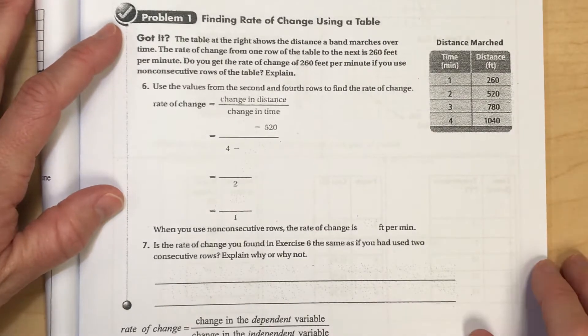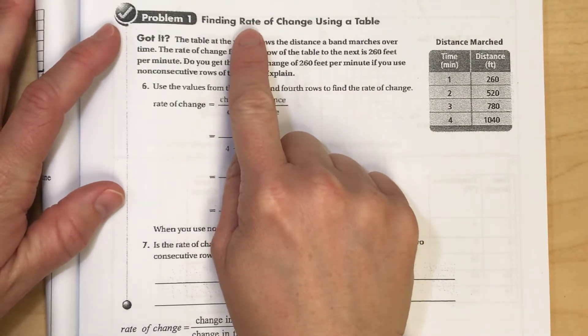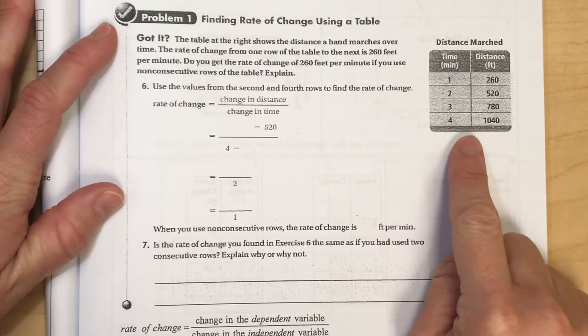In this video, I'm going to show you how to find the slope, also known as rate of change, from a table of values.